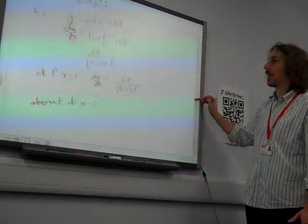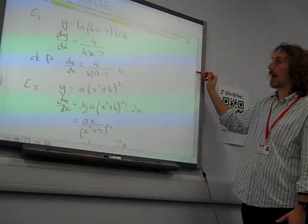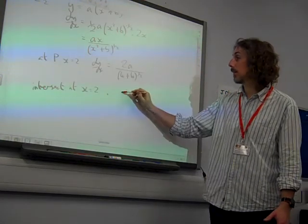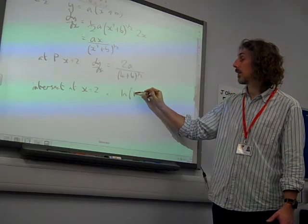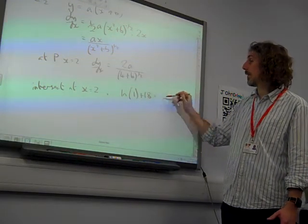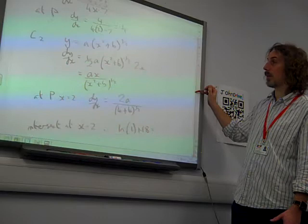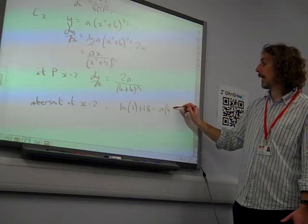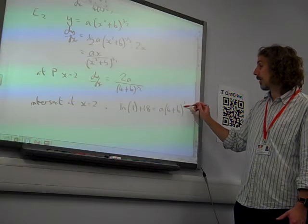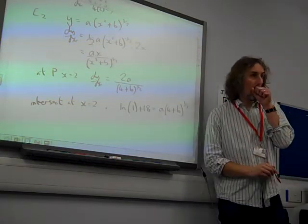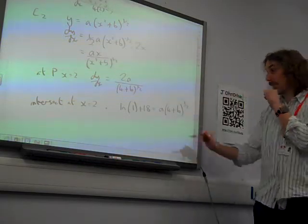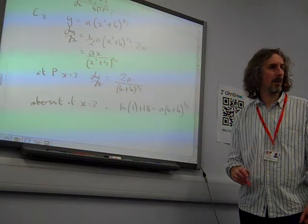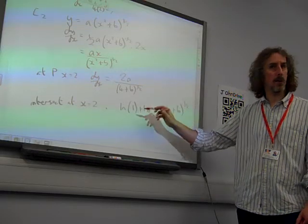that means that at x equals 2, we've got ln of 8 minus 7 plus 18 is equal to, what's the other one? a times (4 plus b) to the half. So then we have that, what's ln1? 0, isn't it? e to the 0 gives us 1.